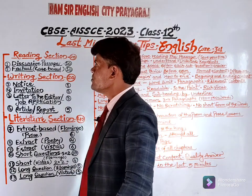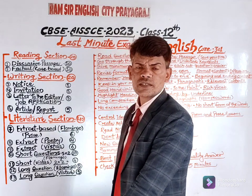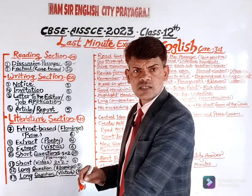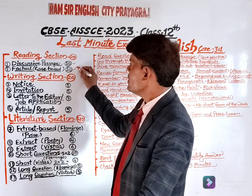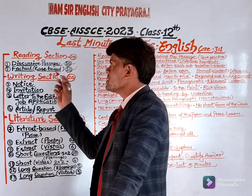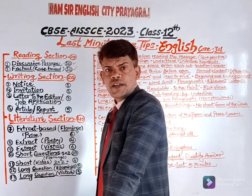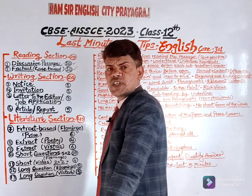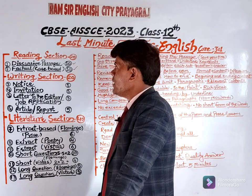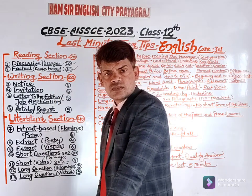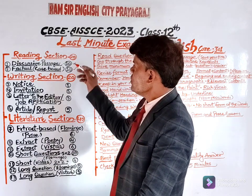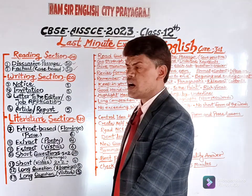In the reading section, there will be two reading passages. The first one is for 10 marks and the second one is for 10 marks. The first one is discursive — 10 MCQs or objective questions will be given. The next one is factual, case study based. So your reading section is 20 marks.